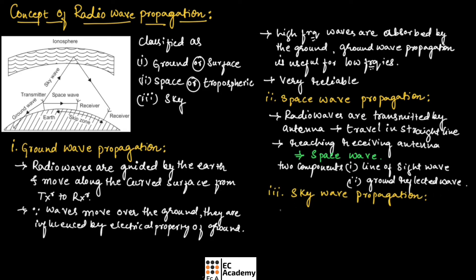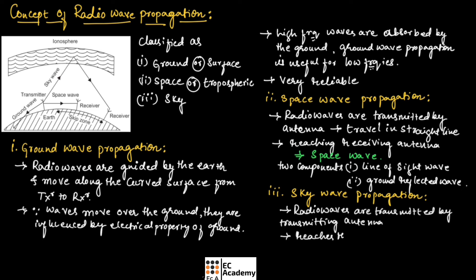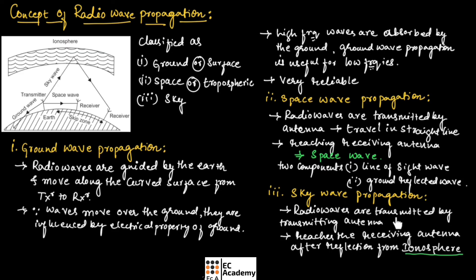Now, let us understand sky wave propagation. In sky wave propagation, radio waves are transmitted from the transmitting antenna and reach the receiving antenna after reflection from the ionosphere. As seen in the diagram, the radio waves are transmitted, reflected by the ionosphere, and then reach the receiving antenna.